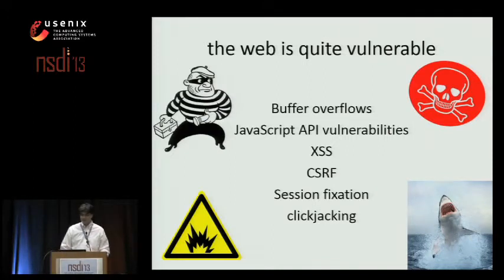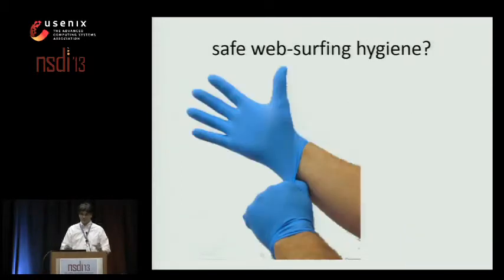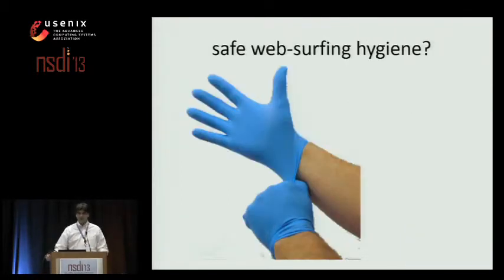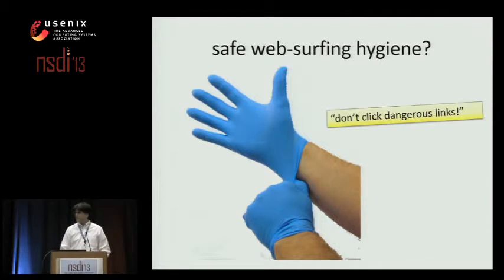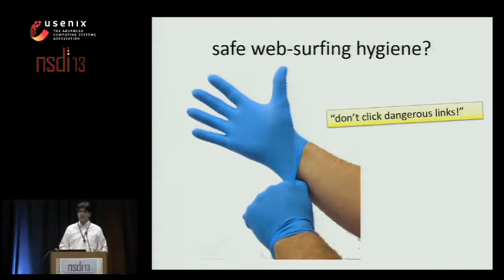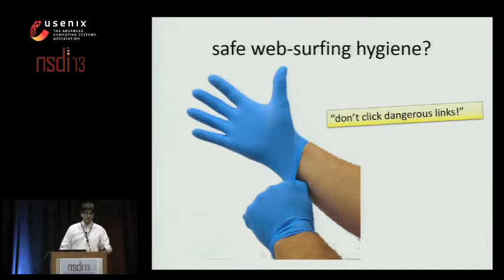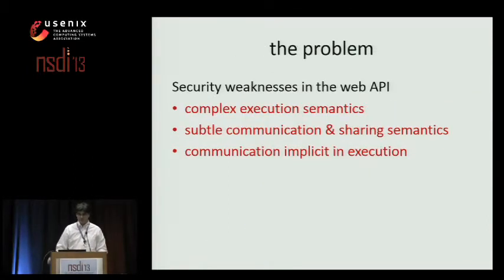Given all this complexity, what advice can I give my mom to stay safe when she's using the internet? I can say, be sure you practice safe surfing hygiene. But what does that mean? Don't click dangerous links? What's a dangerous link? Can you explain that concept to an ordinary user, or even define it? A dangerous link is the one you clicked on and now your computer's owned.